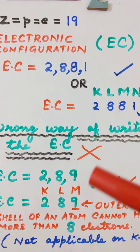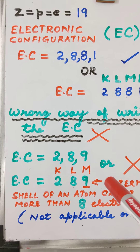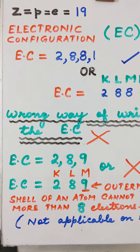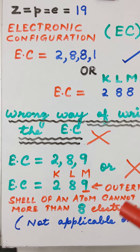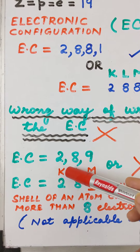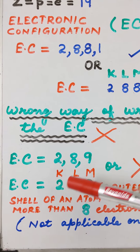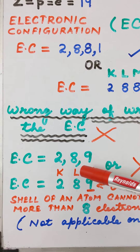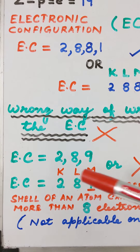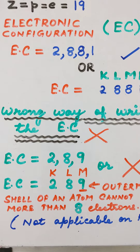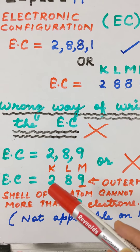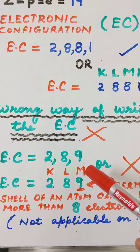To write its electronic configuration, we know that the first shell of any atom can have a maximum of two electrons. So we put two electrons in the first shell. In the second shell we can put a maximum of eight electrons, giving us two plus eight equals ten. We are left with nine remaining electrons.